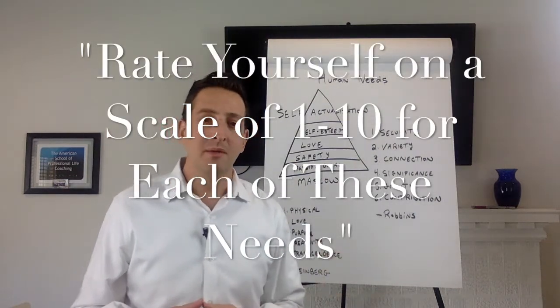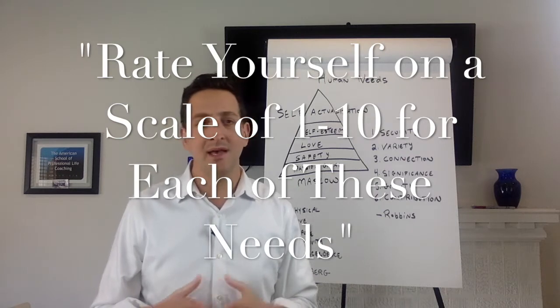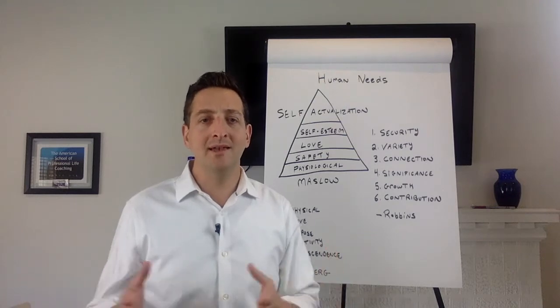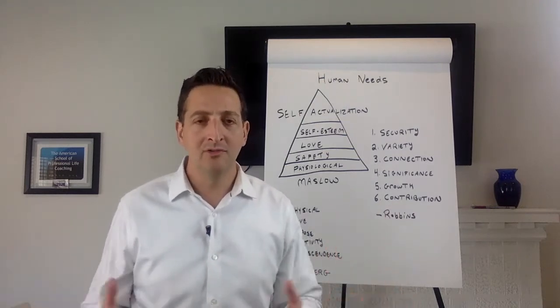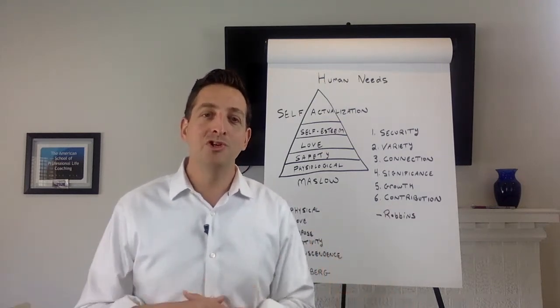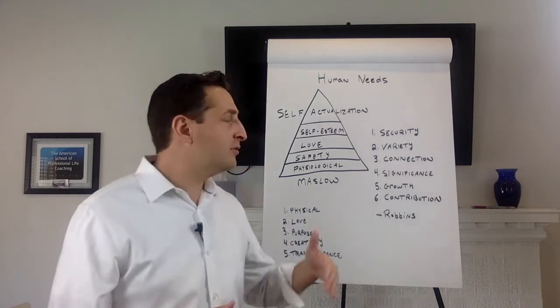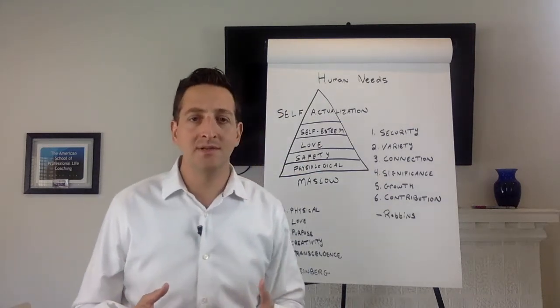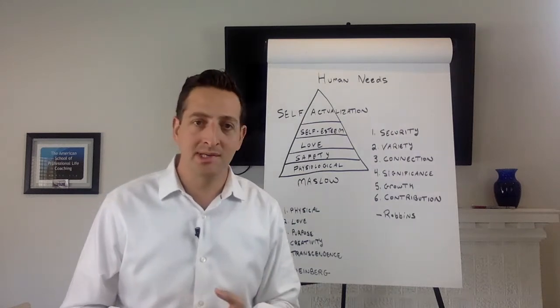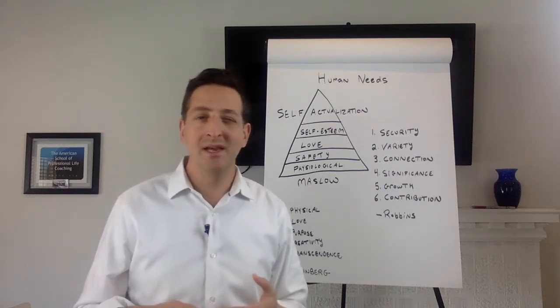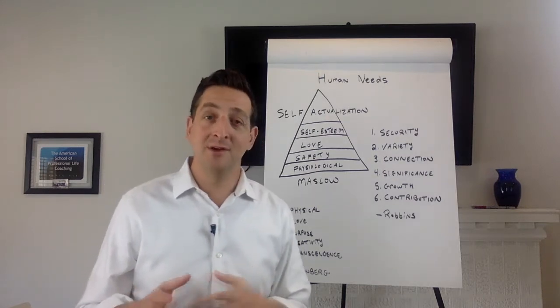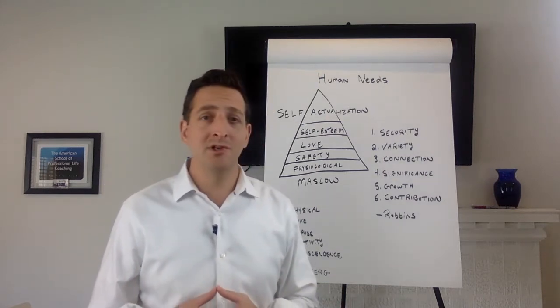What I'm asking them is to say on your physical needs, your physiological needs, on a scale of 1 to 10, 10 being totally full, totally content, how would you rate yourself? So they'll go through that with each of these levels. If someone comes up with physical needs are 10, safety needs are 10, love is a 5, self-esteem is a 5, self-actualization maybe a 2.